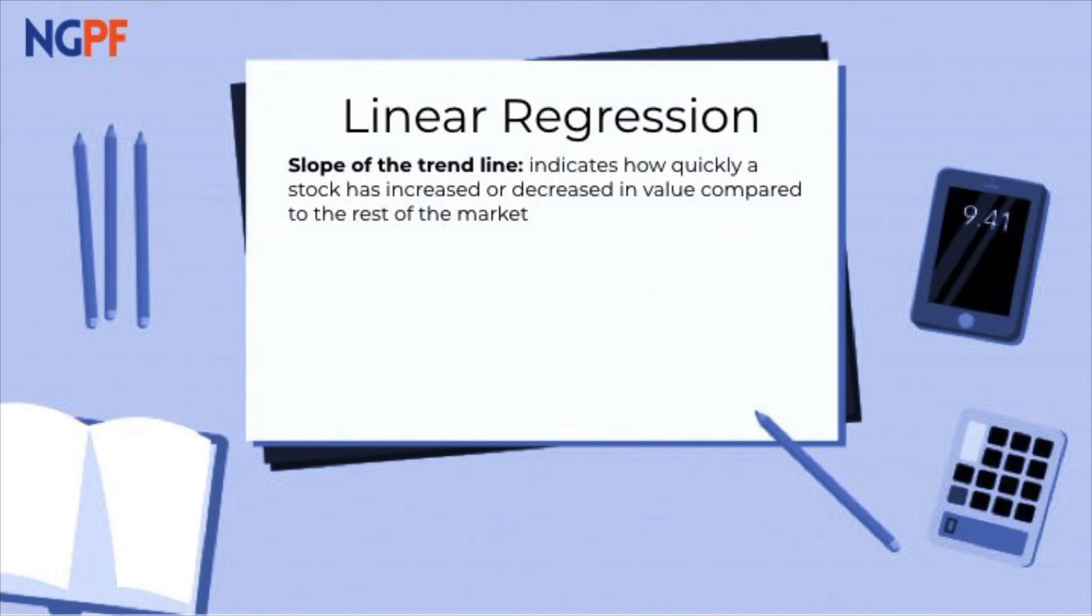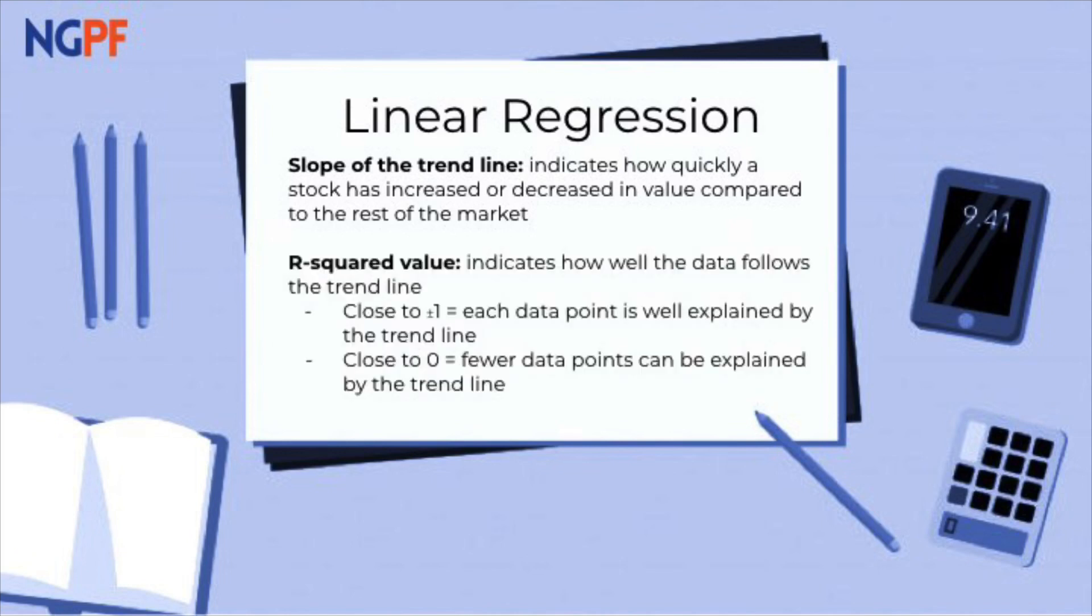Another important element of linear regression is the r-squared value, which tells us how well the data is explained by the trend line. This can help analysts estimate the volatility of a stock. If your r-squared value is close to positive or negative one, then you can assume that the data is well explained by the trend line. And if the r-squared value is closer to zero, then fewer data points can be explained by the model.